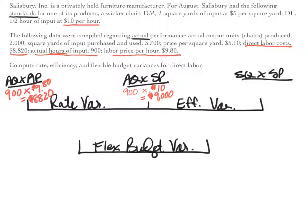Let's move on to the third peg — we're looking for standard quantity times standard price. I already found standard price to be ten dollars per hour, so I'll bring that over. Now I need to calculate standard quantity. Standard quantity is what should have happened at the actual level of production. The actual level of production was two thousand chairs. How much labor should have been used per chair? The standard is half an hour of input per chair, so the standard quantity is therefore one thousand hours. One thousand times ten dollars is ten thousand dollars.